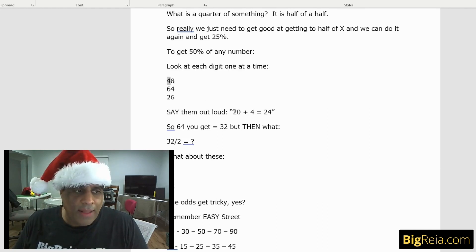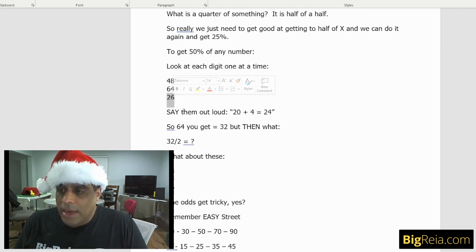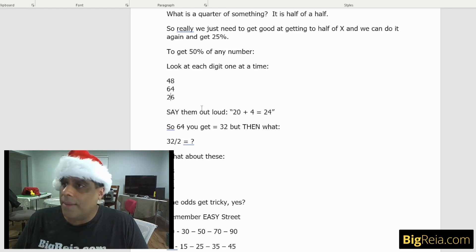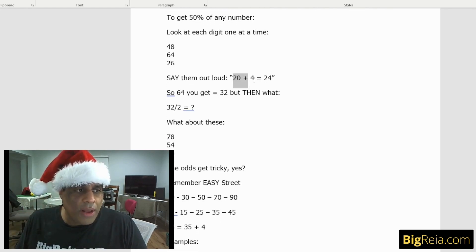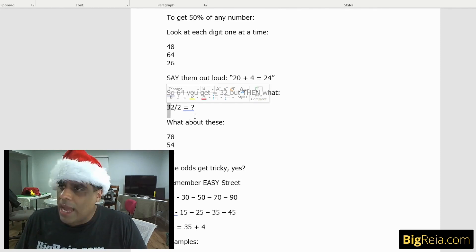The way we say it out loud is 20 plus four. So look at 64 as 30 plus two, 32. Look at 26 as 10 plus three. So we could say these numbers out loud, but it's the way that we want to look at that. 20 plus four. 32 divided by two is 16. But that sounds a little weird because you look at the three, what's half of three? See what I'm saying?